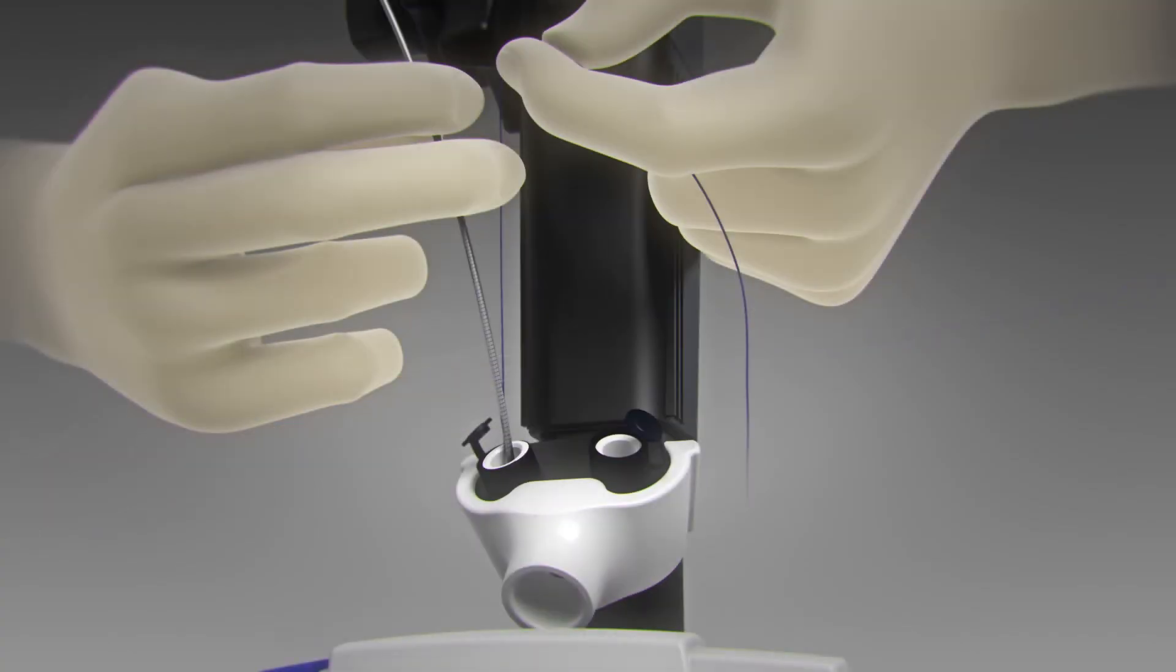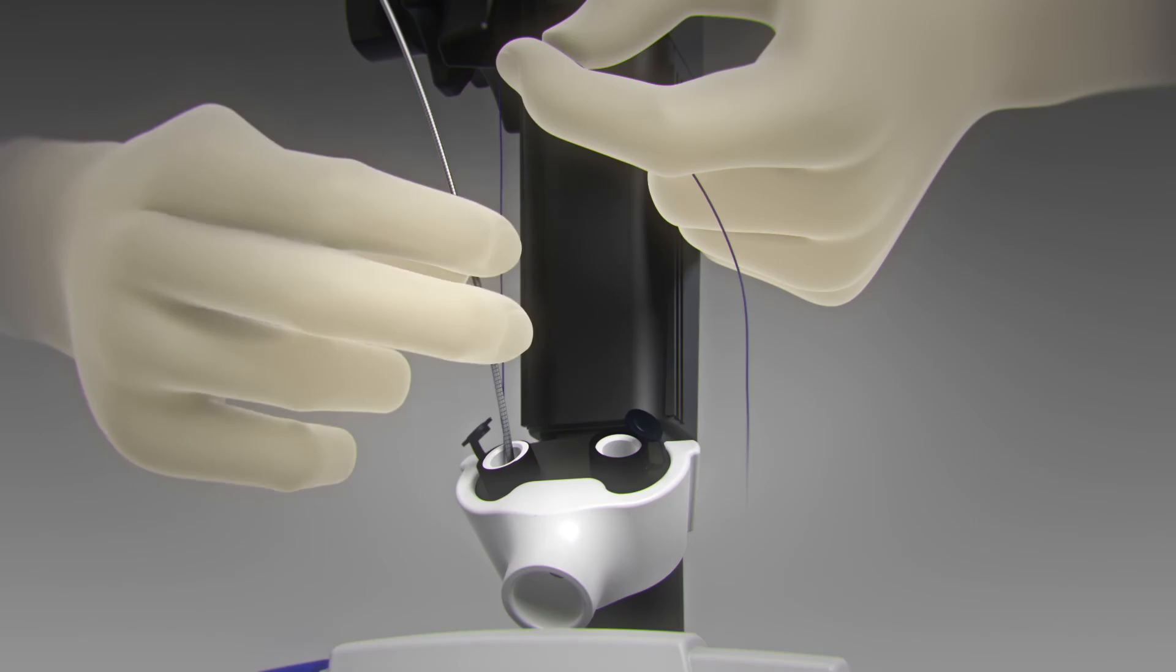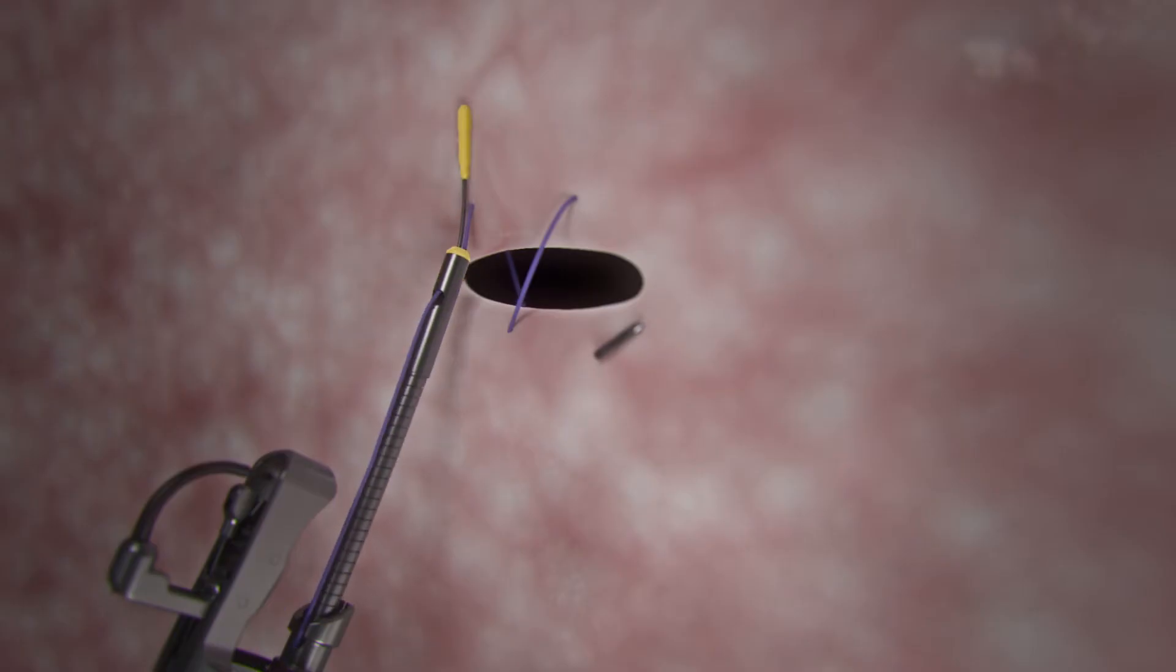While holding slight suture tension, insert the cinch into the 3.7 millimeter channel of the scope. Advance the cinch catheter until it extends approximately 3 centimeters past the overstitch end cap, targeting the placement of the first bite.